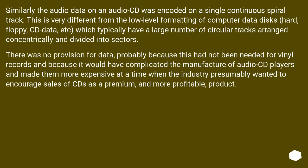The audio data on an audio CD is encoded on a single continuous spiral track. This is very different from the low-level formatting of computer data disks — hard, floppy, CD data, etc. — which typically have a large number of circular tracks arranged concentrically and divided into sectors. There was no provision for data, probably because this had not been needed for vinyl records and because it would have complicated the manufacture of audio CD players and made them more expensive at a time when the industry wanted to encourage sales of CDs as a premium and more profitable product.